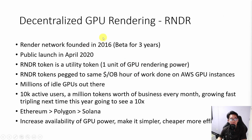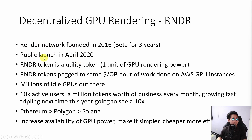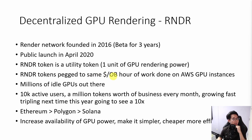Coming back to the Render Network token — RNDR — Render Network was founded in 2016 and was in beta for about three years. Their first public launch was in April 2020, when a short video graphic of a black Volvo SUV was rendered on 212 distributed GPUs at a cost of about 2,300 render tokens. One render token can be thought of as a utility token representing one unit of GPU rendering power, pegged to the same OctaneBench hour of work as AWS GPU instances. Right now there are millions of idle GPUs out there — in your iPad, laptop, or wherever — and they are trying to combine all these idle GPUs from around the world into a decentralized GPU rendering network.